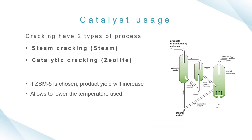For cracking, there are two types of processes: steam cracking and catalytic cracking. For steam cracking, there is no specific catalyst used — it uses steam. For catalytic cracking, a specific catalyst is used, which is zeolite. The key difference is that steam cracking produces high yields of alkenes, while catalytic cracking employs a catalyst and produces high yields of branched and cyclic alkanes.